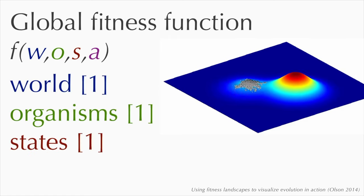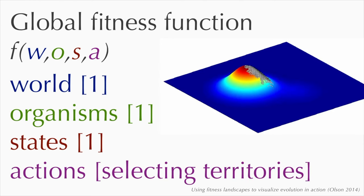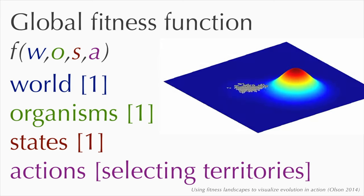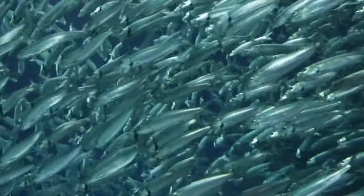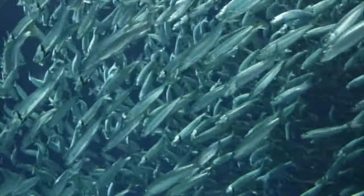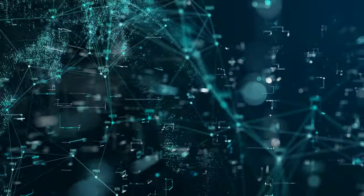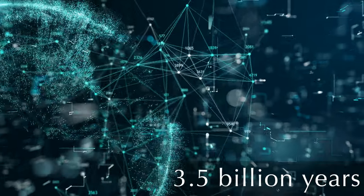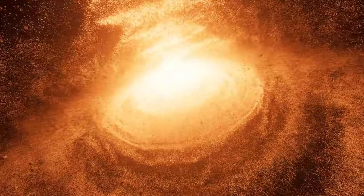Recall the global fitness function F-W-O-S-A. We kept things straightforward with just a handful of territories, one type of organism, one state of thirstiness, and just two available actions: selecting territory A or B. In the real world, all of these values are massive. There are approximately 8.7 million species on Earth, totaling a far greater number of individual organisms, each with their own set of states trying to maintain homeostasis, each taking actions which influence the world, creating an unfathomable web of interactions—compounding for about 3.5 billion years.